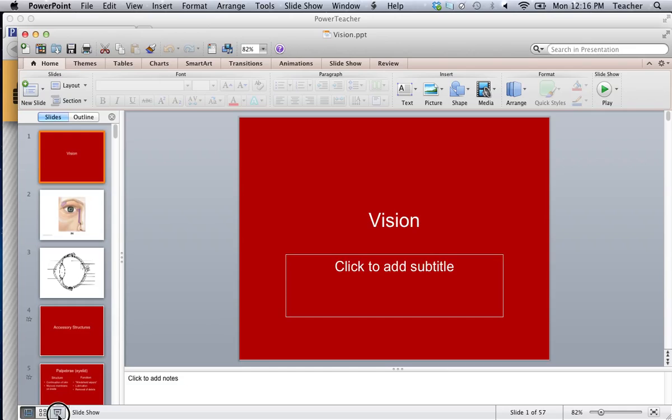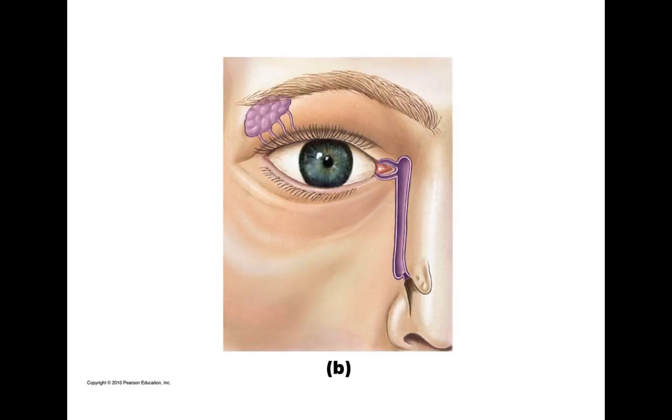Our next section on the senses is on vision. The first thing we're going to do is take a look at the anatomy of the eye and the eye region through a couple of diagrams.